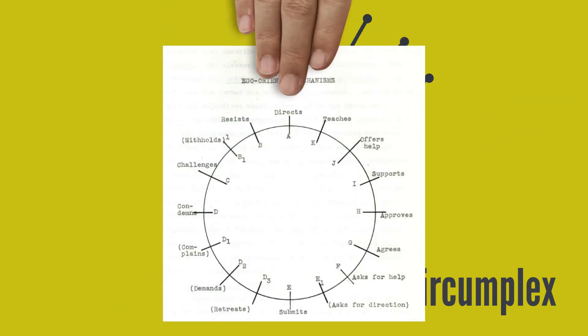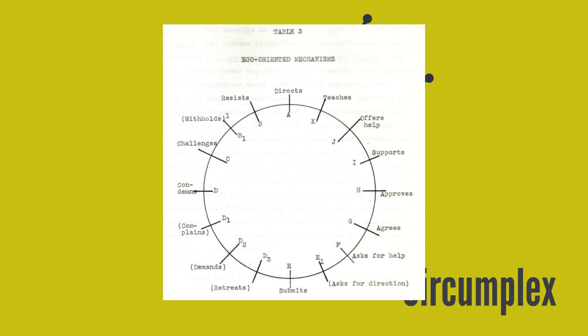Here's another diagram from Leary's dissertation with a circumplex. You can see the mechanisms at the top and bottom are directs and submits, which are mutual opposites. So there's a vertical axis corresponding to assertiveness or control. The mechanisms at the left and right are condemns and approves, so there's a horizontal axis corresponding to affection or disaffection. If we go back to directs at the top, you can see the adjacent items are resists and teaches. These are both types of assertive behavior, but teaches is on the affection side and resists on the disaffection side. This early version of the circumplex was later refined by Leary and other psychologists.